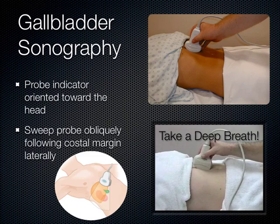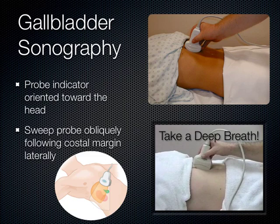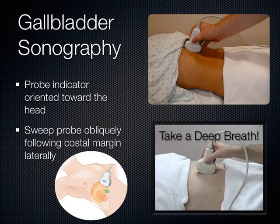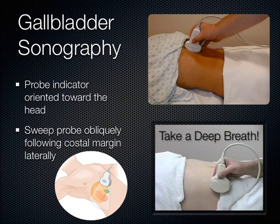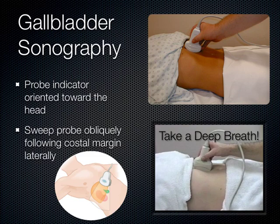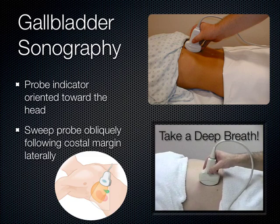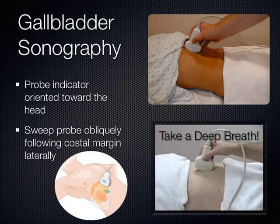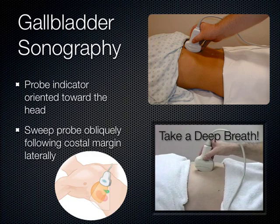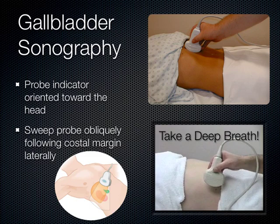There are so many anechoic structures seen on screen when you do this that sometimes you need a landmark to identify the gallbladder. The right and left lobes of the liver come together, and whenever two things come together on ultrasound you see a hyperechoic line — like Morrison's pouch where the liver and kidney come together. Where the right and left lobes of the liver come together is called the main interlobar fissure, which is the fossa that the gallbladder sits in.